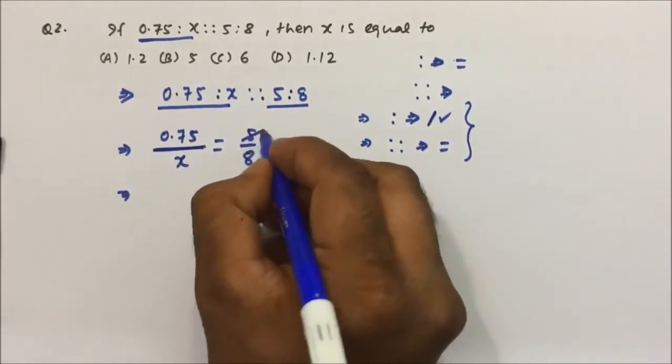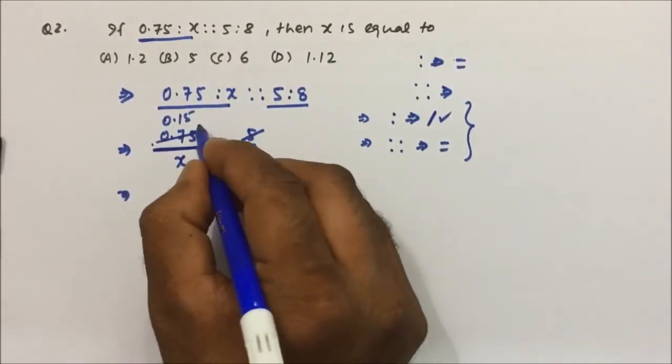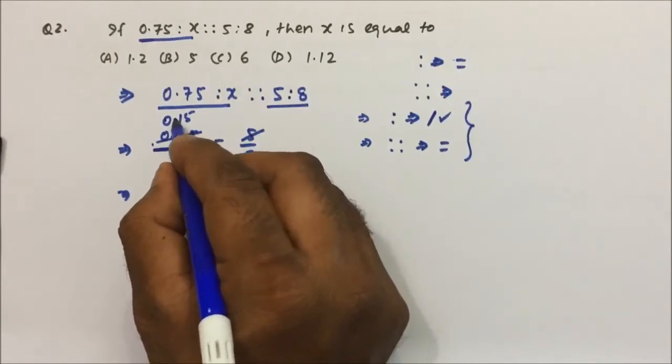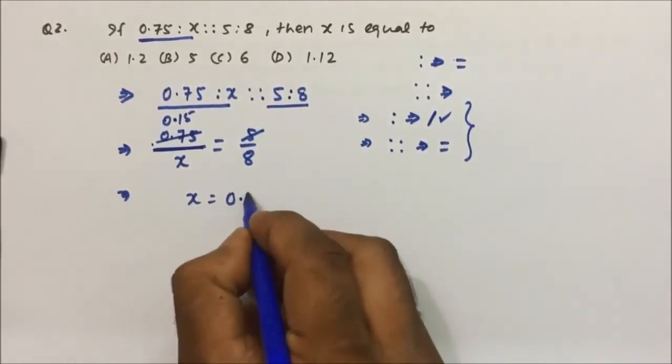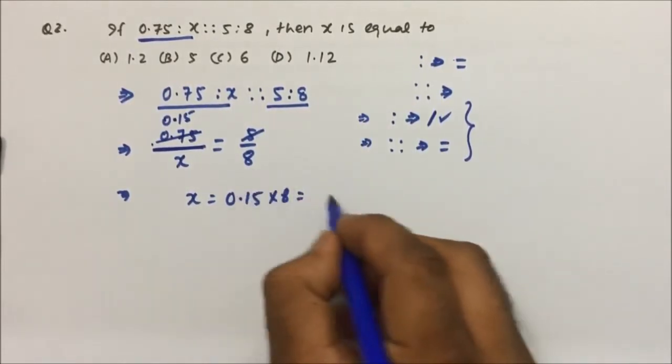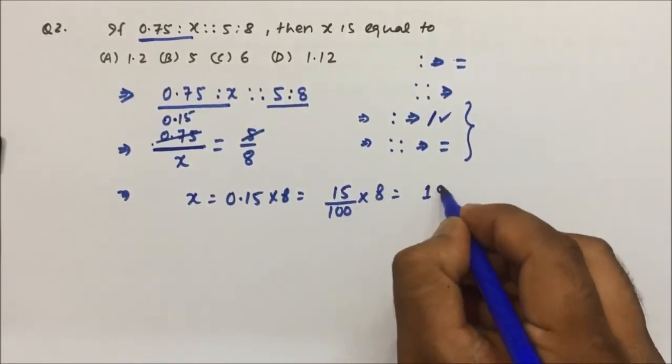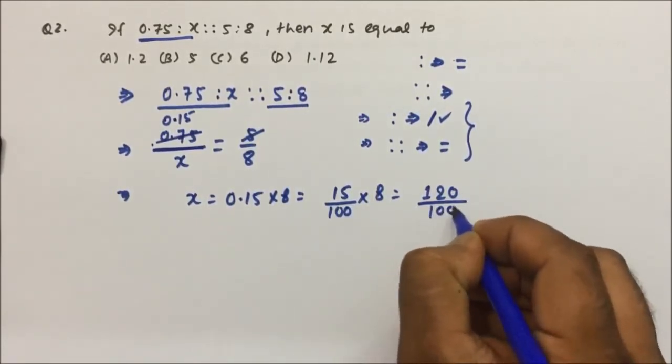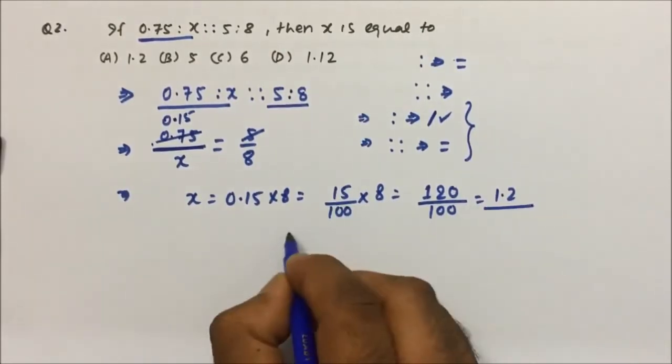15 into 5 is 75, so with decimal we put 0.15 here. Now x equals 0.15 into 8. If you remove the decimal, then 15 divided by 100 into 8. 15 into 8 is 120 divided by 100, which equals 1.2.